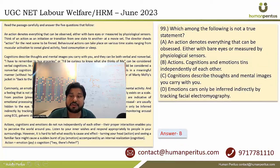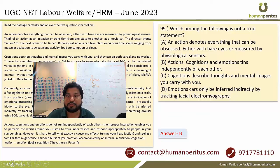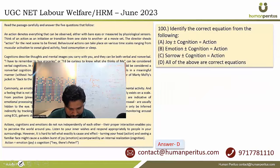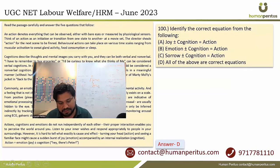Which of the following is not a true statement? Statement B — that action and cognition are independent of each other — is not true at all. Regarding the correct equation, option D is the correct answer.